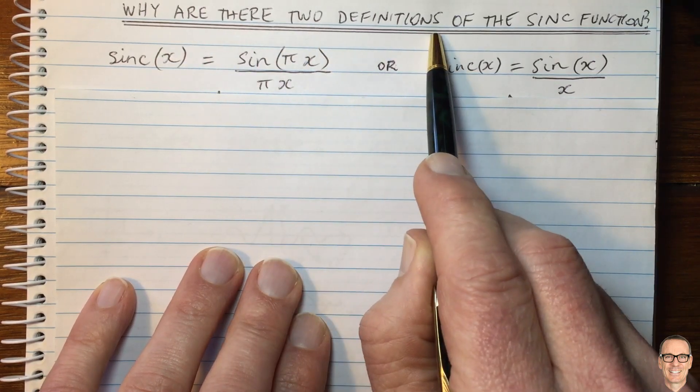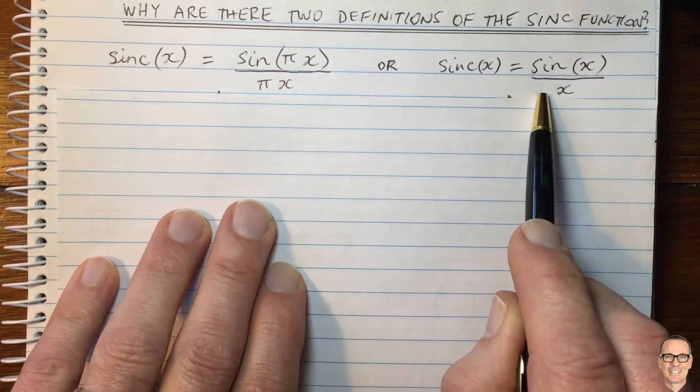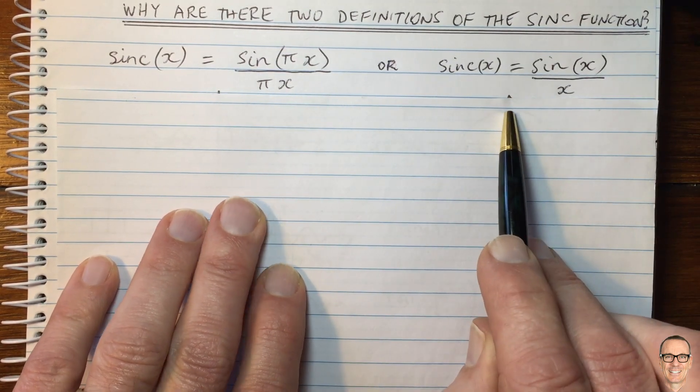Why are there two different definitions of the sinc function? And here they are here. I think this is something that can often confuse people.